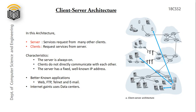Internet services like Google and Amazon use data centers consisting of many servers. A client can be any device like smartphones, laptops, or other devices. These clients request services from the servers, and once the server receives the request, the server responds to the clients.